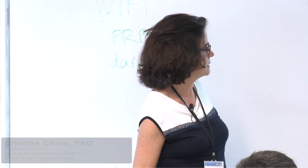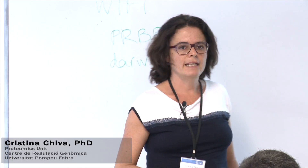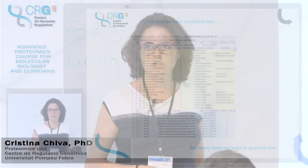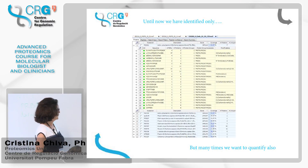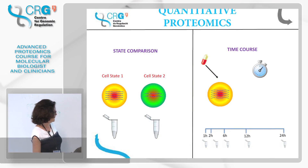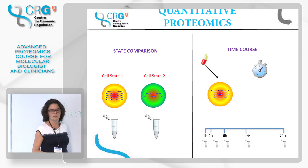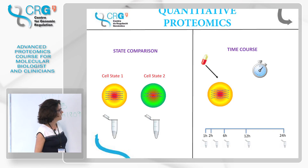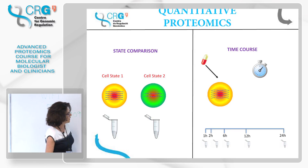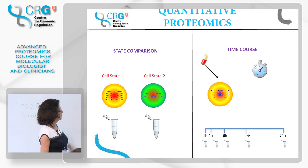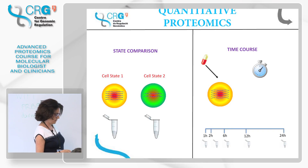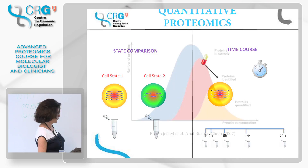To see which proteins are the good ones, but many times this is not enough — we want to also quantify. For example, if we have two cell states, one treated with a drug and the other as a control, we want to know which proteins are different in each state. Another example would be a time course experiment where we treat cells with a drug and want to see the effect over time. So for doing that, we need quantitative proteomics.